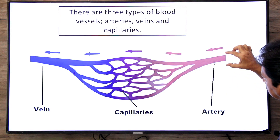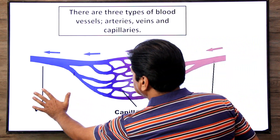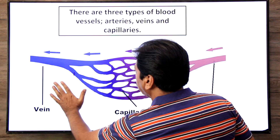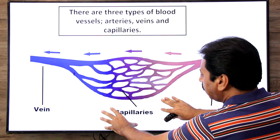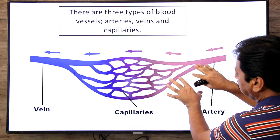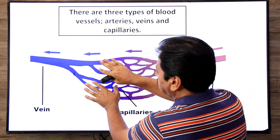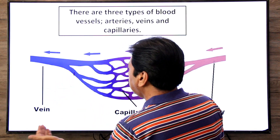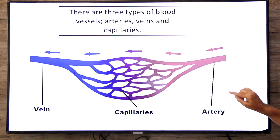Arteries are the blood vessels that carry blood from the heart towards different organs. Veins are the blood vessels that return blood from organs back to the heart. There are also smaller blood vessels known as capillaries. Blood flows from arteries → arterioles → capillaries → venules → veins, and then returns to the heart. Now let's start with arteries — what are arteries?